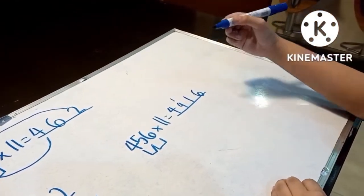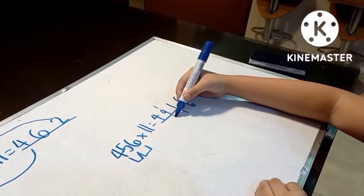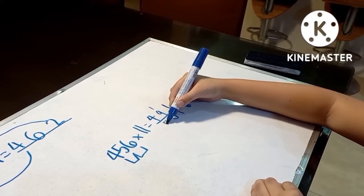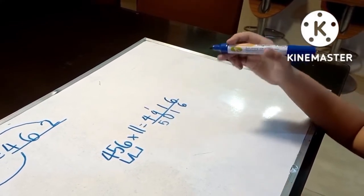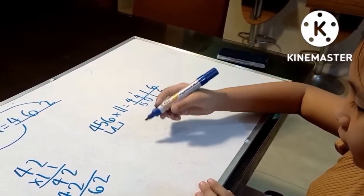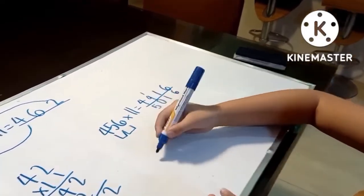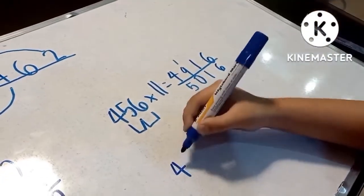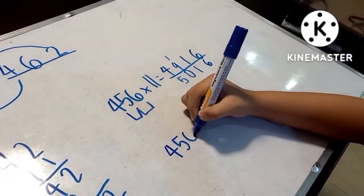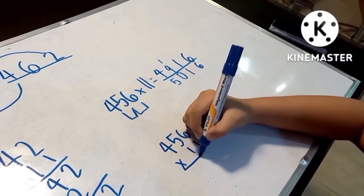Now, our final answer for this is six, one, zero, five. Now let's check our answer if it's correct. Like the two digits, we'll multiply normally. So, 456 times 11 equals.